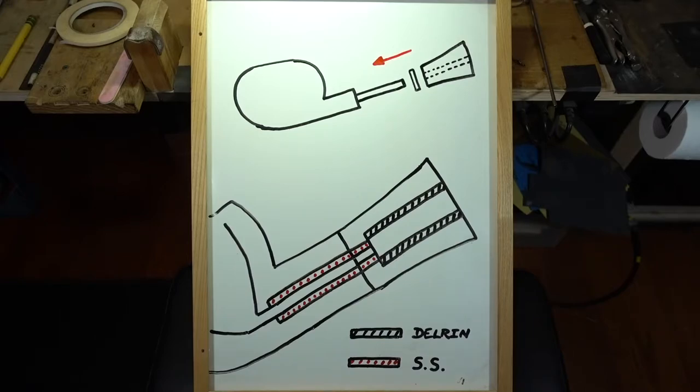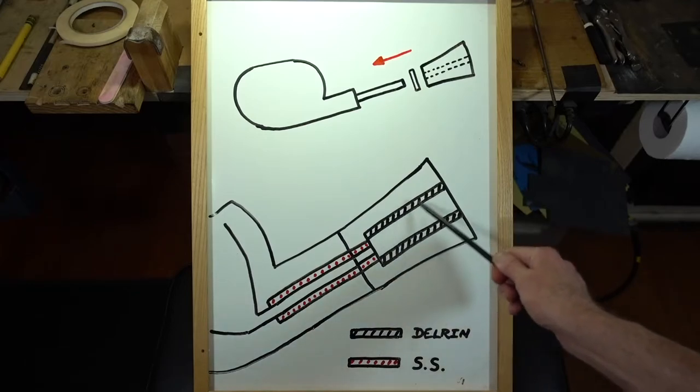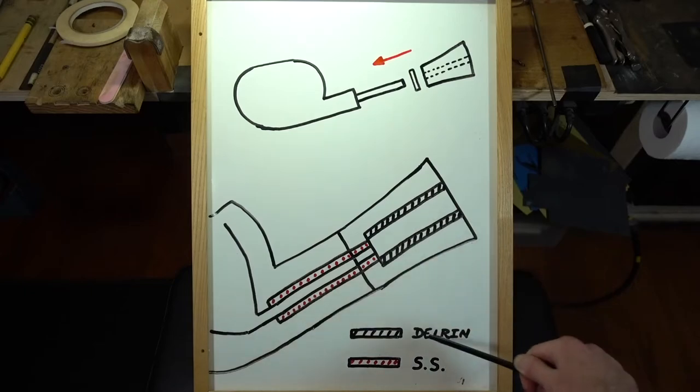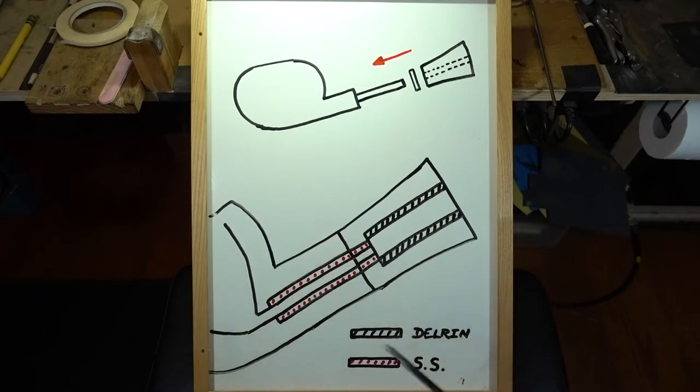So what we're going to be doing is what you see here on the bottom. Now, these black areas are a Delrin insert, and the red is stainless steel tubing.